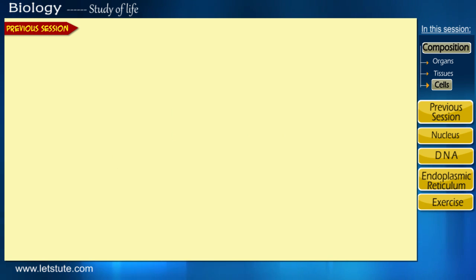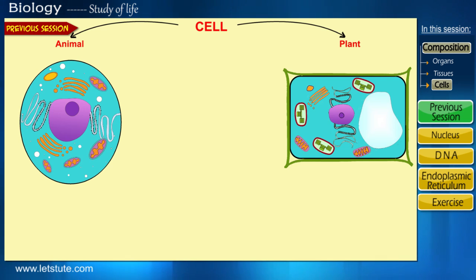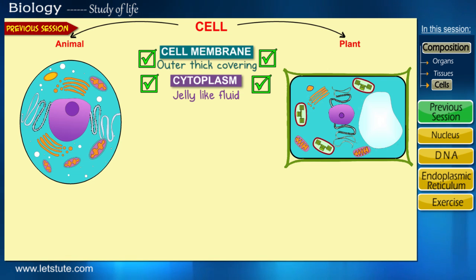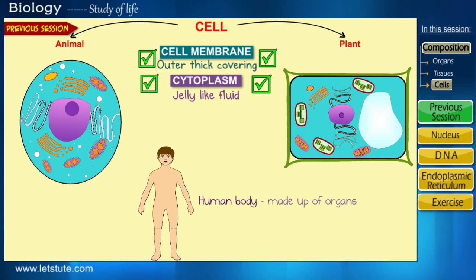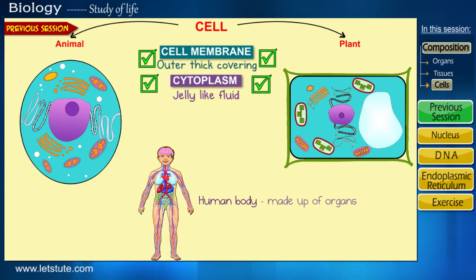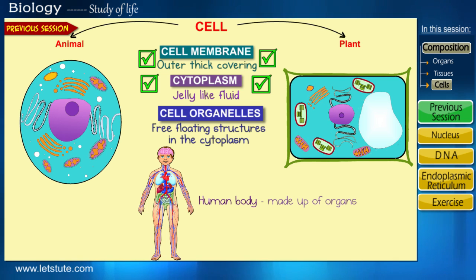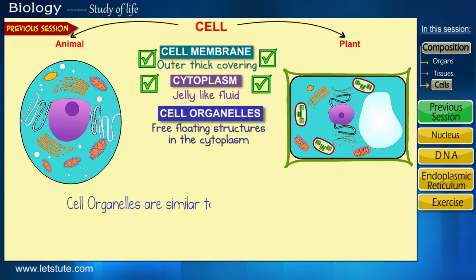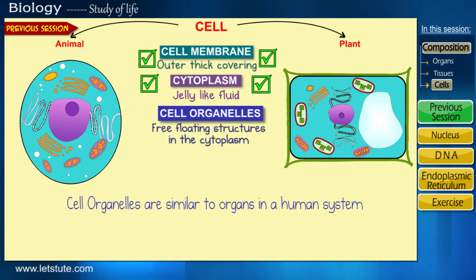In our previous session on cells, we saw some of the basic components of a cell, like the cell membrane and cytoplasm. We also know that just like how humans need organs to perform various functions, cells require organelles to perform specific functions. So we can say that cell organelles are similar to organs in a human system.